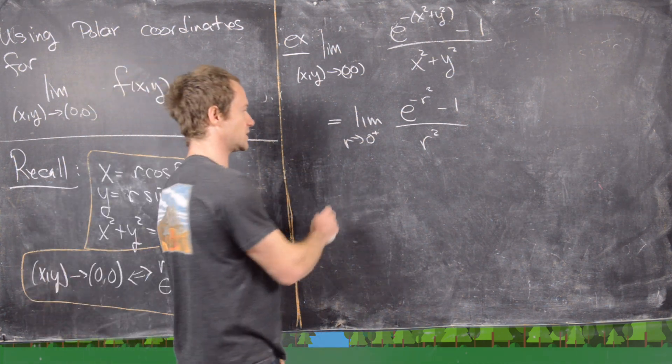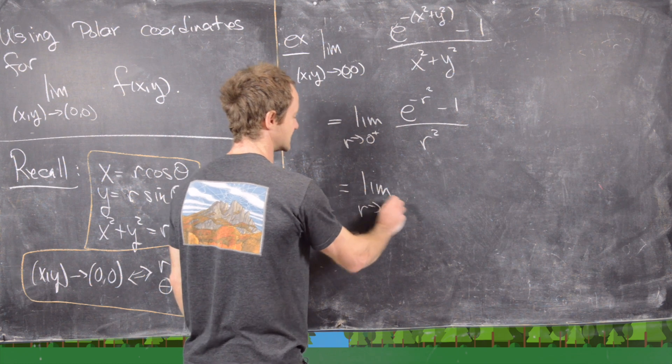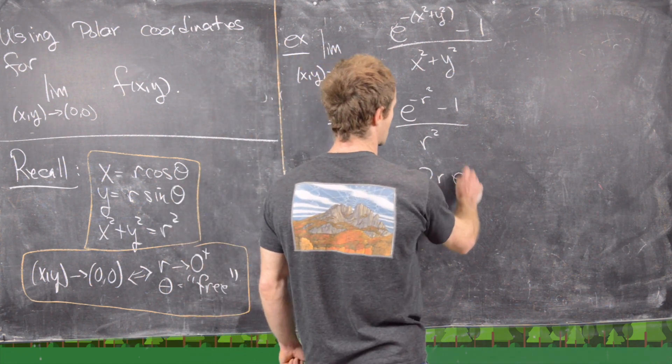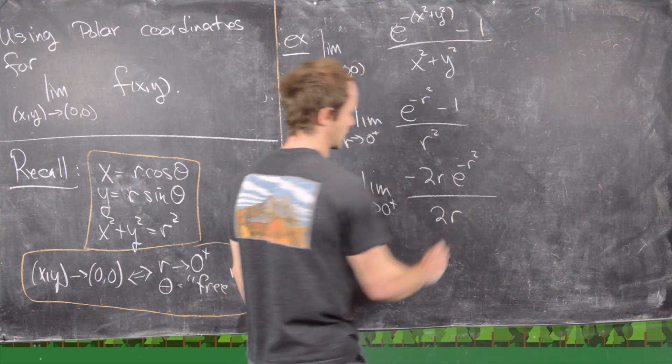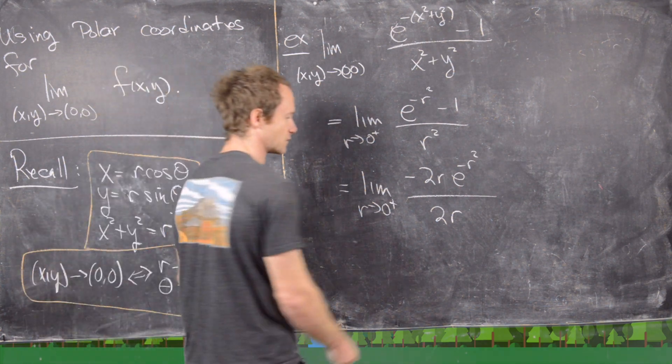But now we can use L'Hopital's rule for this. Notice that's going to give us the same thing as the limit as r goes to zero from the right of minus two r e to the minus r squared over two r. Just by taking the derivative of the numerator and the denominator, in other words, L'Hopital's rule.